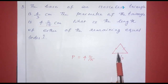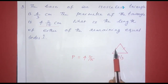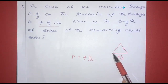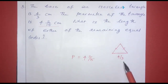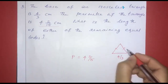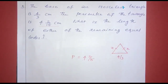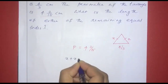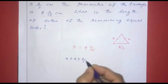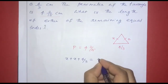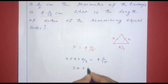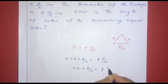For an isosceles triangle, two sides are equal. Let each equal side be x. The third side (base) is 4/3 cm. Adding all three sides: x plus x plus 4/3 equals the perimeter. So 2x plus 4/3 equals 4 and 2/15 cm.